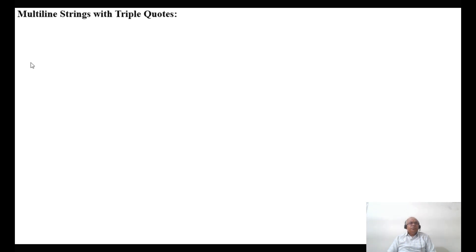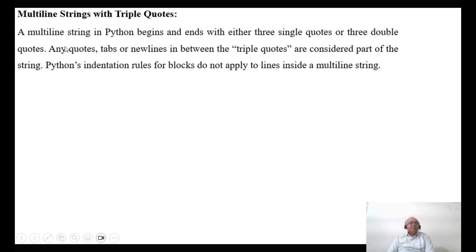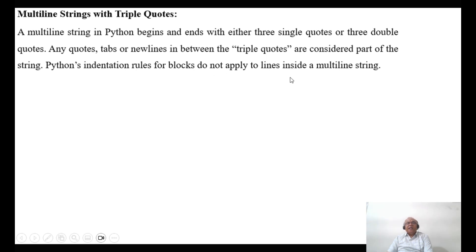In this video, we will talk about multiline strings with triple quotes. A multiline string in Python begins and ends with either three single quotes or three double quotes. Any quotes, commas, tabs, or newlines in between the triple quotes are considered part of the string. Python's indentation rules for blocks do not apply to lines inside a multiline string.